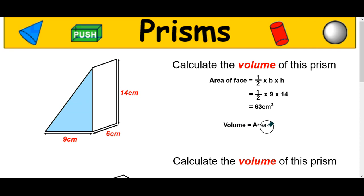Volume of a prism is area of the face part times the length of the prism. So this is the face part. And the length of the prism is 6. So we're doing 63 multiplied by 6. And your answer to that will be 378 centimeters cubed.